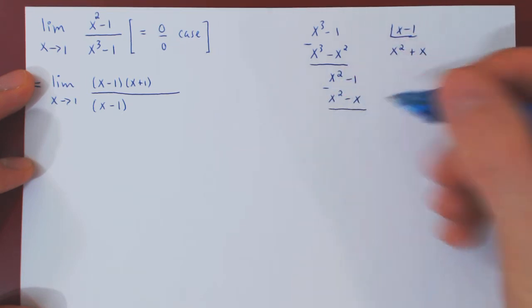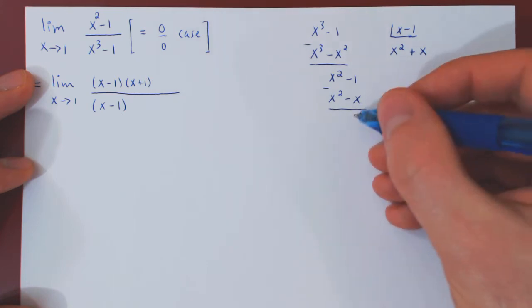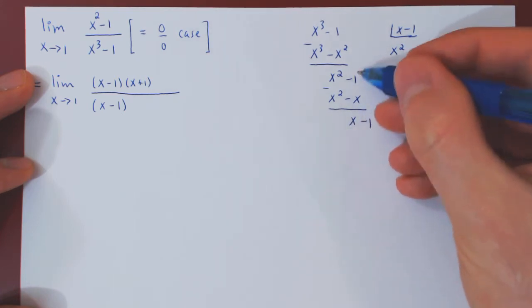Subtract once again. These cancel. Negative negative is positive, so x. And again, a leftover of negative 1.